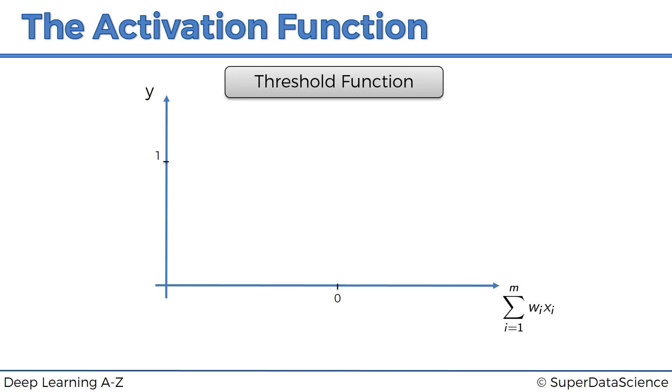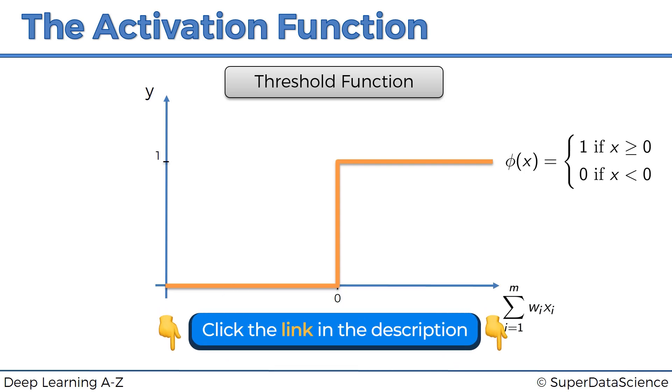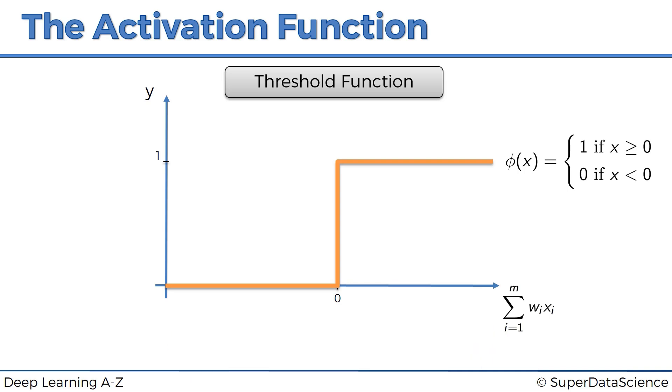So here is the threshold function. This is what it looks like. On the x-axis, you have the weighted sum of inputs. On the y-axis, you have the values from zero to one. Basically the threshold function is a very simple type of function where if the value is less than zero, then the threshold function passes on zero. If the value is more than or equal to zero, then threshold function passes on a one. So it's basically kind of like a yes, no type of function.